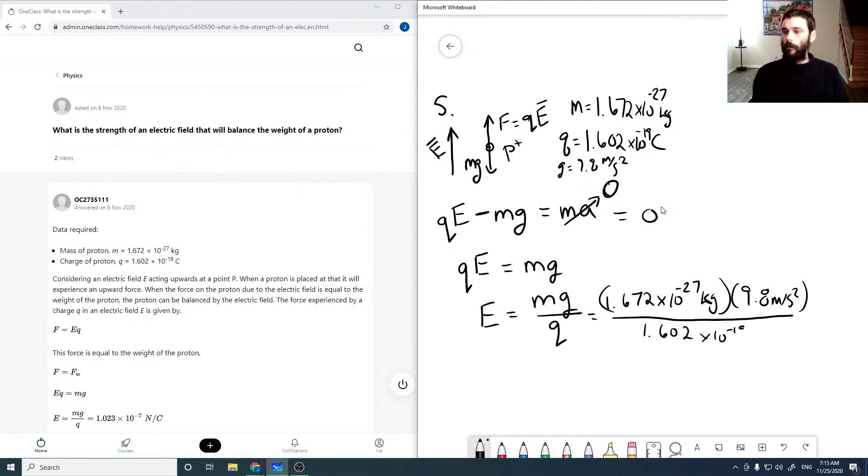Electric fields should be in newtons per coulomb. Here we have kilogram meters per second squared, which is a newton, so that looks good. And if we run through all this, we get 1.0228 times 10 to the minus 7 newtons per coulomb.